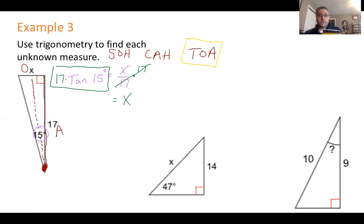So the first thing you want to do is you want to check the mode and you want to make sure that it is in degrees. If it's not in degrees, you're going to get this wrong. And you press it just like you see it. So you hit 17 times tan 15, like the following. And you hit enter.